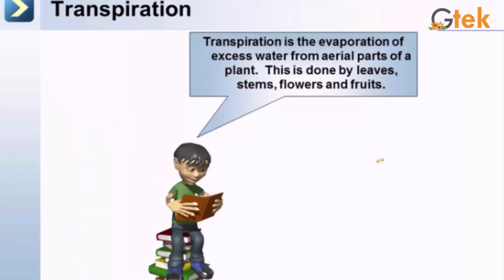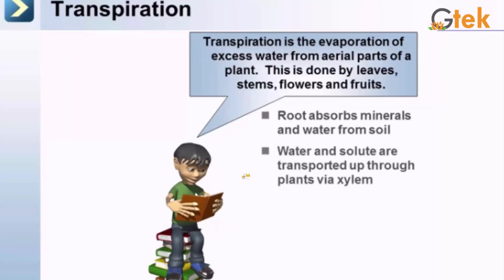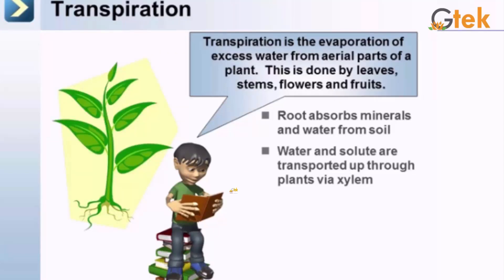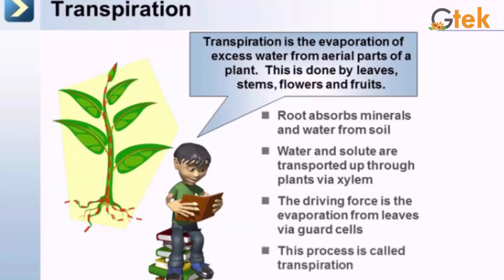Transpiration is the evaporation of excess water from the aerial parts of a plant, carried out by leaves, stems, flowers, and fruits. The roots absorb minerals and water from the soil for growth. Water and solutes are transported up through the plant via xylem. The driving force is the evaporation from leaves via gases — this overall process is called transpiration.